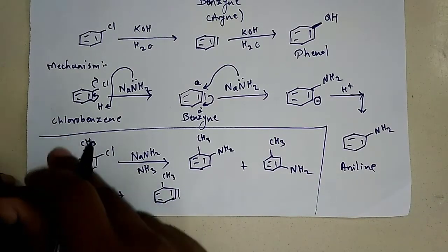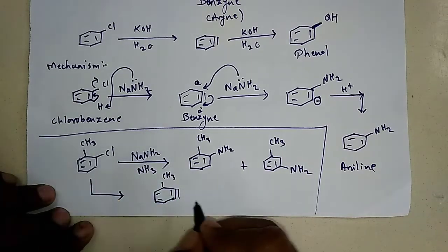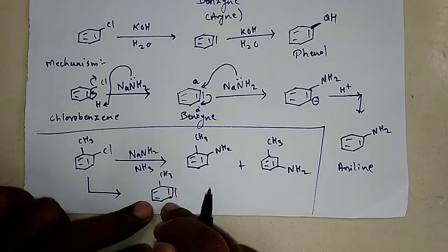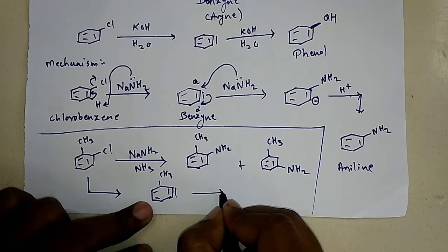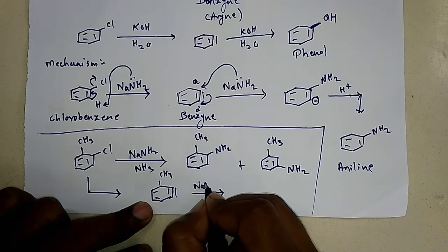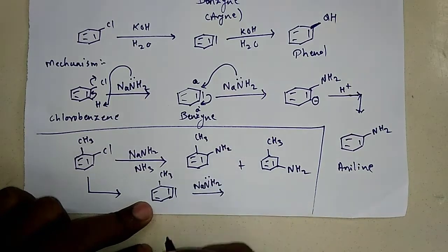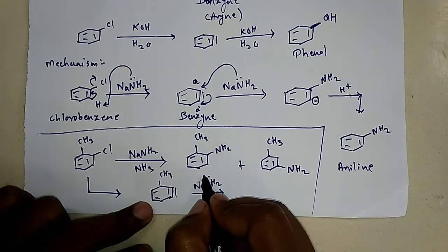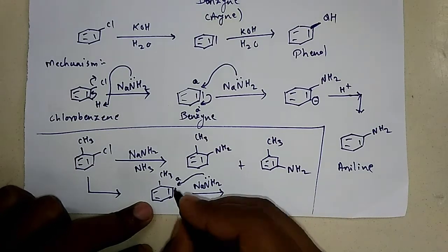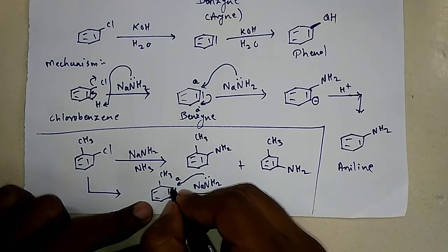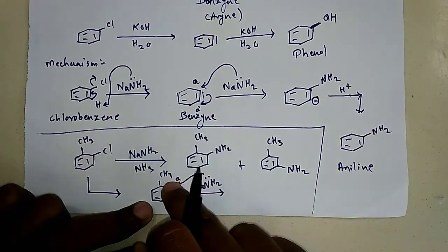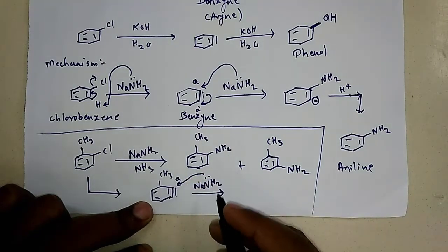This is the structure of intermediate if one mole of NaNH2/NH3 is being used with 2-methyl chlorobenzene. And now another molecule has two possibilities to attack from, let's say A and A'. It will attack from A, so here it seems to be somewhat crowding just because of the presence of methyl group.